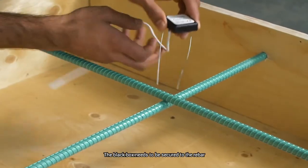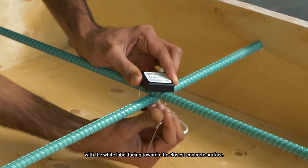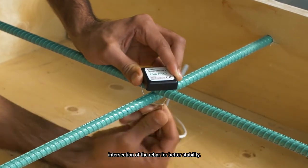The black box needs to be secured to the rebar with the white label facing towards the closest concrete surface. It is recommended to place SmartRock on the intersection of the rebar for better stability.